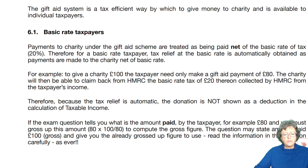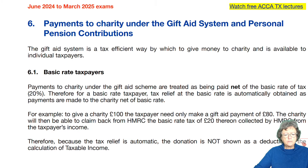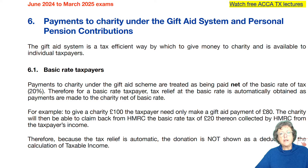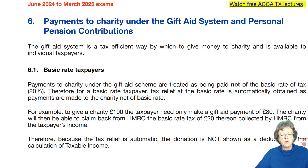Section six of chapter two talks about payments to charities under the Gift Aid scheme and personal pension contributions, and the impact that that can have on your income tax computation for an individual. We have mentioned both of these before but not in much detail.